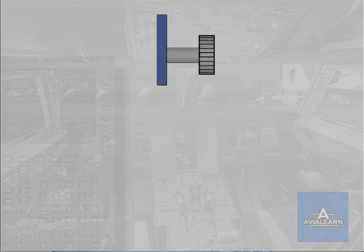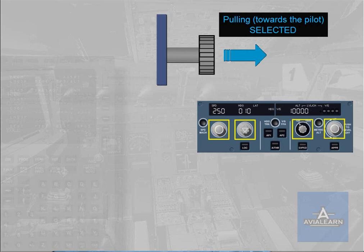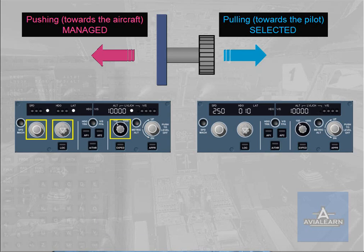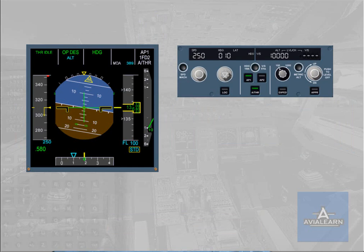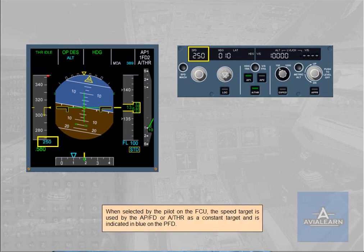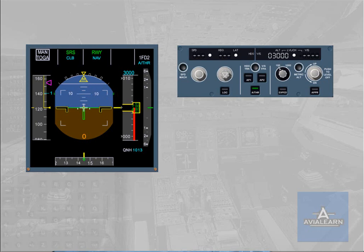The pilot can engage selected modes by pulling the corresponding selection knobs on the FCU, and engage the managed modes by pushing the appropriate selection knobs on the FCU. When selected by the pilot on the FCU, the speed target is used by the autopilot flight director or autothrust as a constant target and is indicated in blue on the PFD. When managed by the FMS, the speed target is automatically adjusted according to the computed speed profile and is indicated in magenta on the PFD.